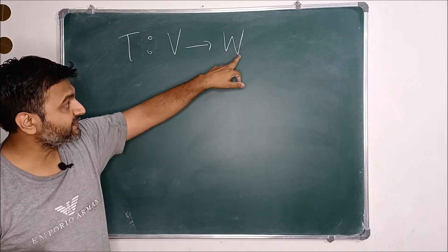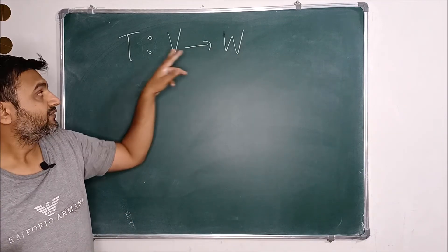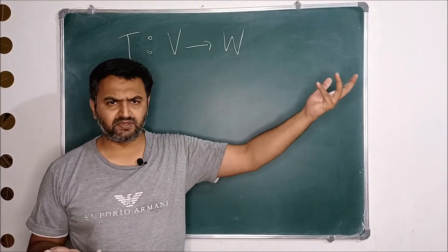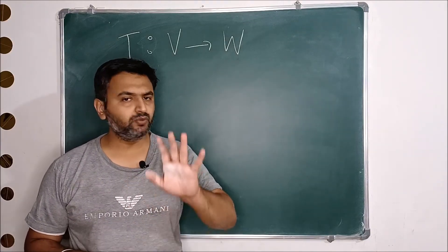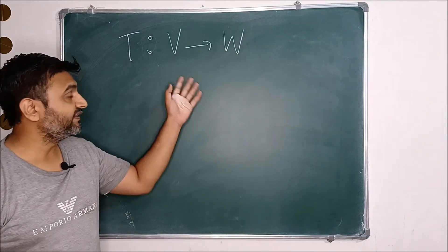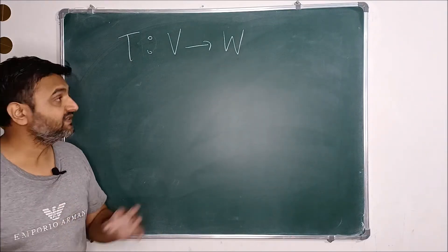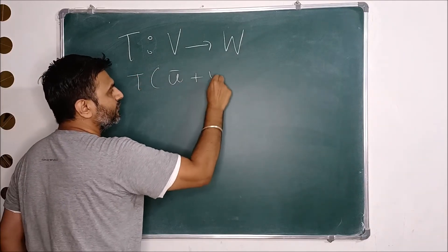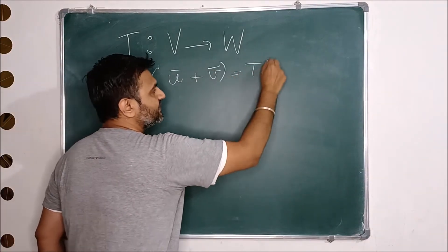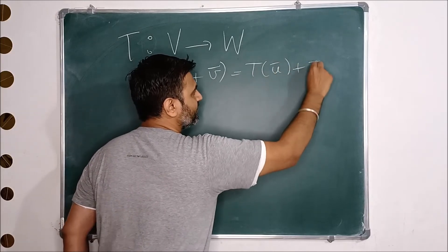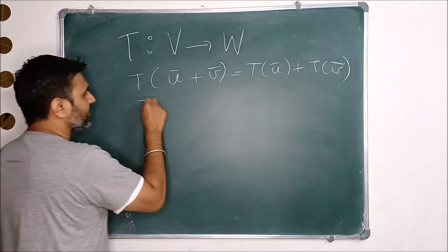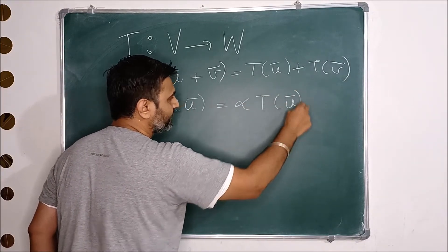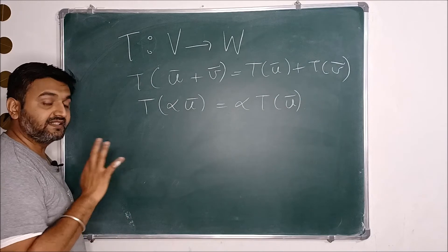Today we are going to look at the subspace of the codomain. So suppose V and W are vector spaces over real numbers — it can be complex numbers or any field, but for simplicity let's stick to real numbers. My T is a linear map, which means it satisfies two properties: T(U+V) = T(U) + T(V), and T(αU) = α·T(U), where α is a real number.